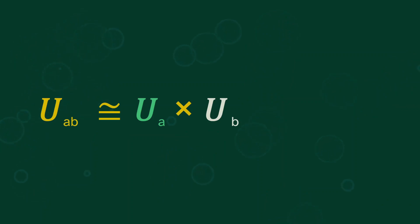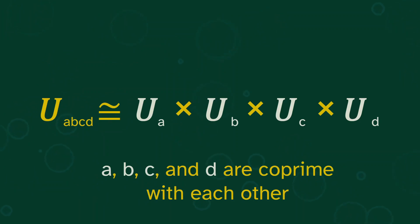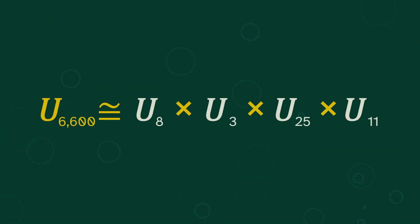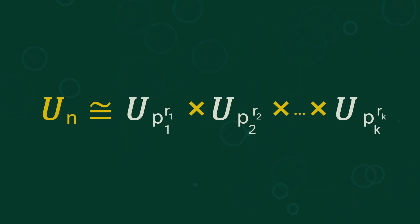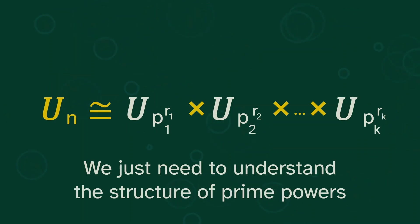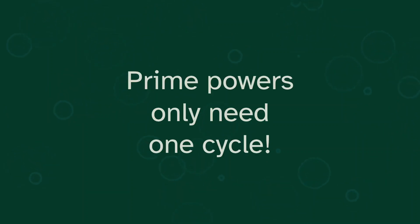So the structure of any UAB is determined by UA and UB. We can break it down into smaller pieces. But we don't have to do this with just two pieces. We could continue to ABC and ABCD. We just have to keep in mind that A, B, C, and D are all co-prime with each other. So for example, U of 6,600 is made up of U8, U3, U25, and U11. And we notice that this is all based on the prime factorization of 6,600. And so given any UN, we can break it down into its prime powers. Which means that in order to understand the structure of any UN, we just need to understand the structure of prime powers. And prime powers only need one cycle.